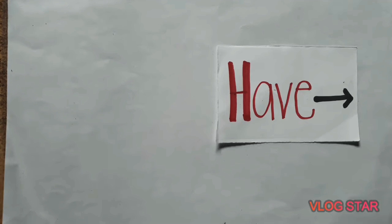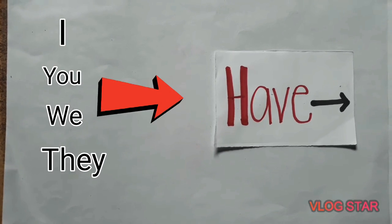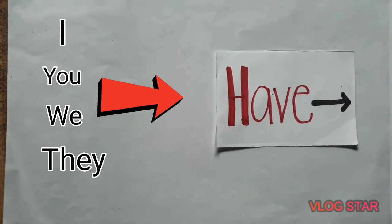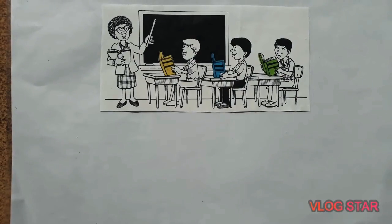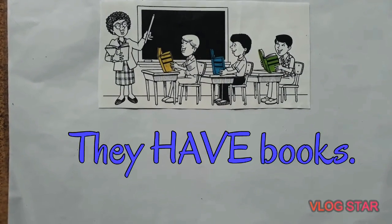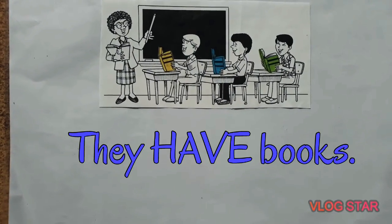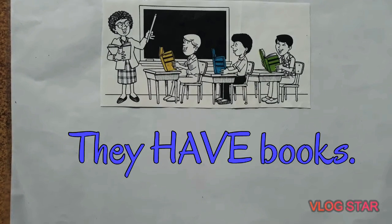Now we are going to divide them into two groups. With them, we are going to use have. For example, they have books.